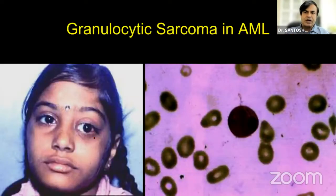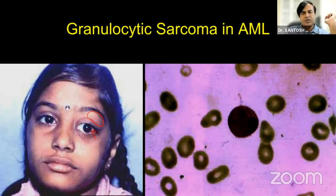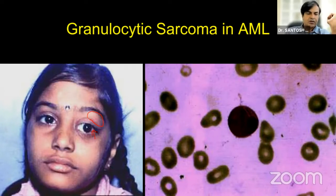Here is another child with abaxial proptosis with eyeball displaced down and a lesion in the supratemporal orbit, but she also has subconjunctival hemorrhage. On fundus evaluation she had Roth spots. Here the diagnostic consideration is different, because rhabdomyosarcoma does not present with subconjunctival hemorrhage or Roth spots — it is mainly leukemia. You don't need to do an orbital biopsy; you simply do a peripheral blood smear, which shows abnormal leukocytes confirming the diagnosis of granulocytic sarcoma.